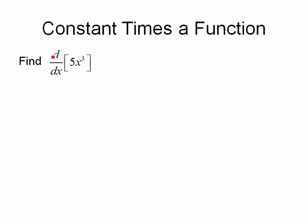So let's take the derivative of 5x cubed. We already know how to take the derivative of x cubed, so what this rule says is we can ignore the 5, take the derivative of the x cubed and then tack the 5 on at the end.